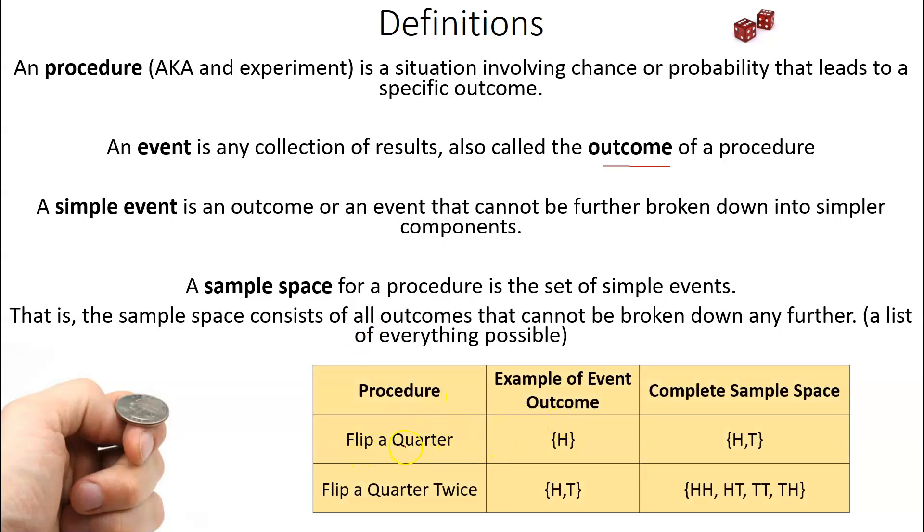Let me give you an example here. If you flipped a quarter, what could possibly happen? Well, an example of an outcome would be a heads. But what could possibly happen? The sample space, well, you could have got a heads, or you could have got a tails. If you flipped the same quarter twice, the possible things that could happen, the events that could happen are here, but the sample space, well, you might have got two heads in a row, or a heads and then a tails, or then maybe two tails in a row, or a tails and then a heads. This is everything that could possibly happen. So that's what a sample space is.